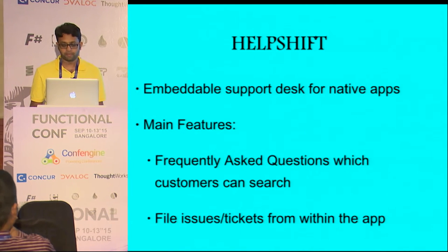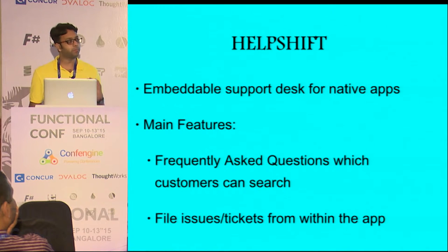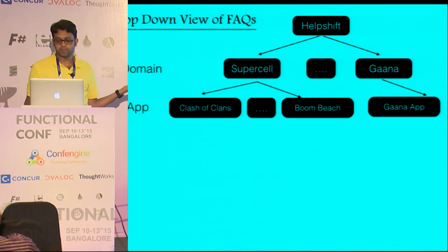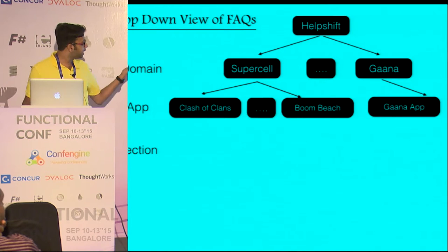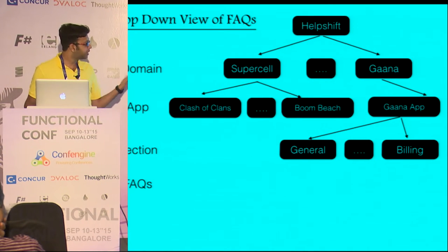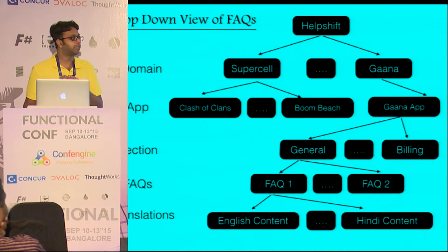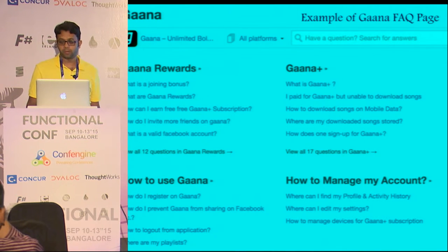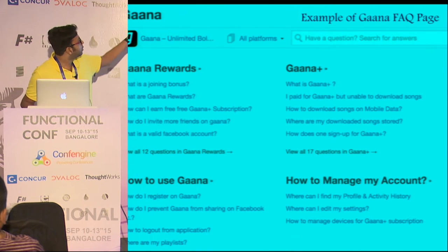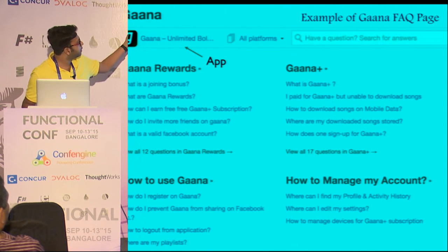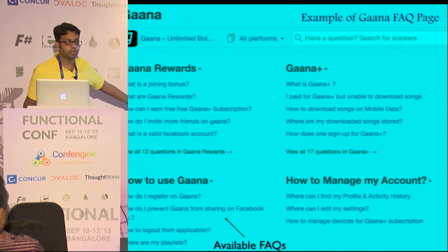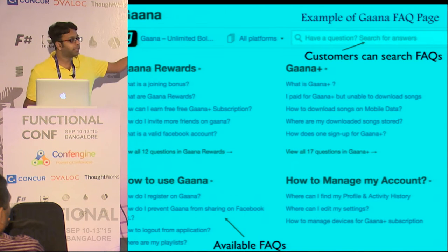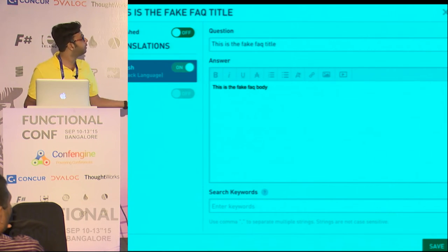So let's take a real example of that. At HelpShift, we are making an embeddable support desk for native apps. As a developer, you can take our SDK and put it inside your app. Each domain can have several apps — Clash of Clans, BoomBeat — and Ghana has their Ghana app. Each app can have several sections, each section can have several FAQs, and each FAQ can have several translations in several languages. Here is a Ghana.com FAQ page. So that's the domain, this is the app, that's the FAQ section, and within that section these are the available FAQs which can be searched by the customers.